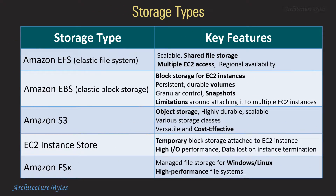Let's look at various storage types. Amazon EFS or Elastic File System is a scalable shared file storage — multiple EC2 instances can easily access it. Amazon EBS or Elastic Block Storage can be attached to an EC2 instance but has limitations around attaching to multiple EC2 instances. It provides persistent durable volumes and you can create snapshots. Amazon S3 is an object storage — it is highly durable, scalable and cost effective. EC2 Instance Store is temporary storage on an EC2 instance — it provides high IO performance and data is lost on instance termination.